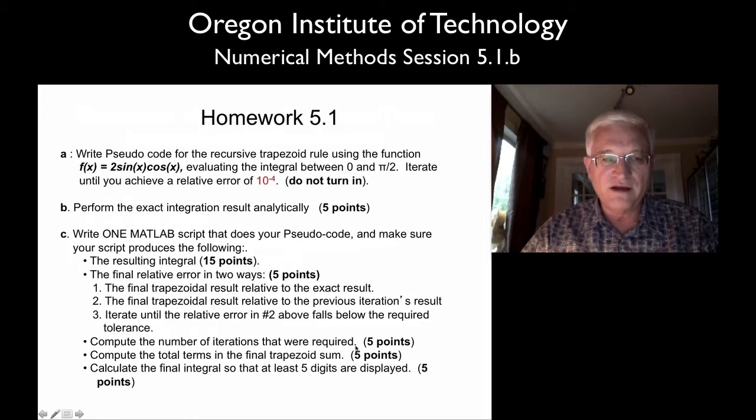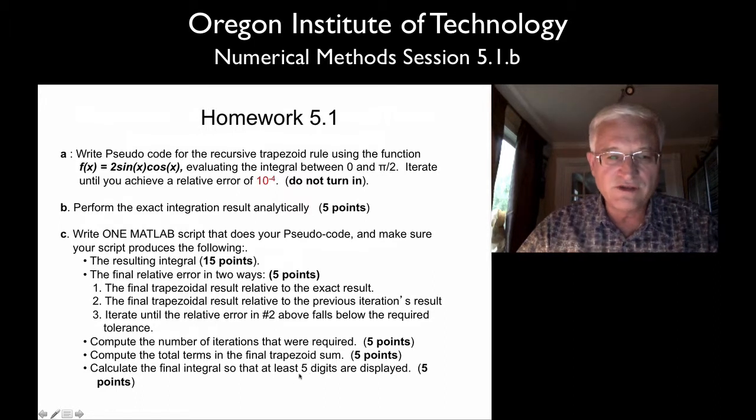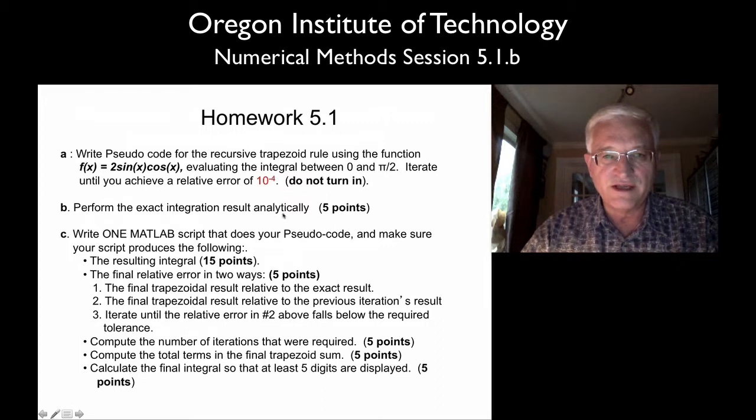I want you to calculate the number of iterations it took, how many total terms there were. That's not the same thing. So think about the difference between the recursion level and the actual number of trapezoidal sums you do across the entire looping process. It would be best to display this to at least five digits since you're trying to get an error down to 10 to the minus 4th.